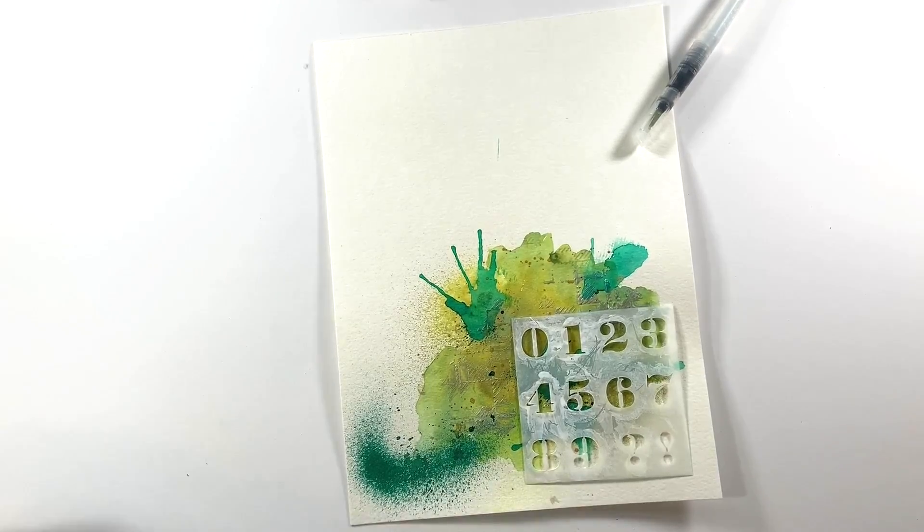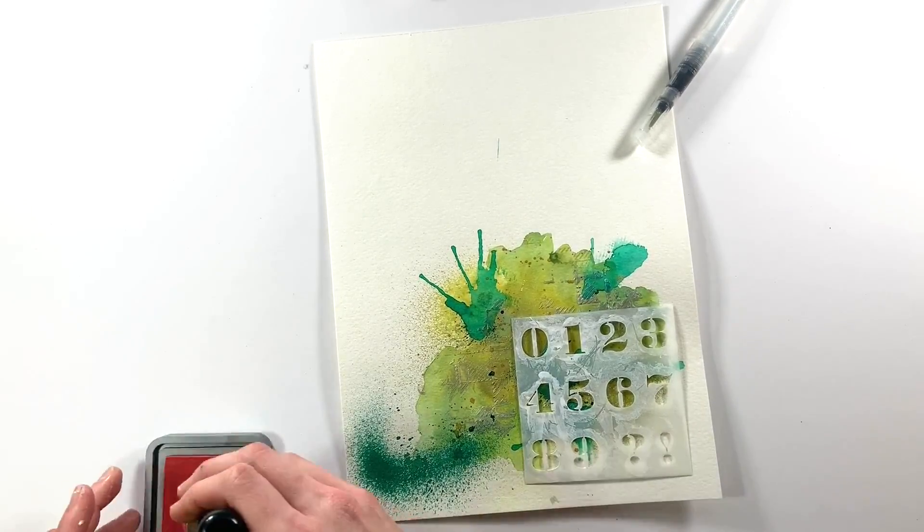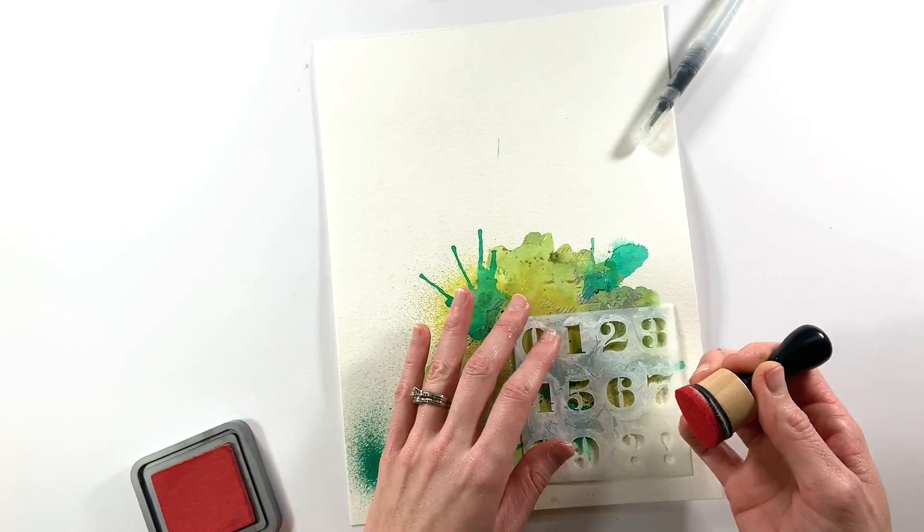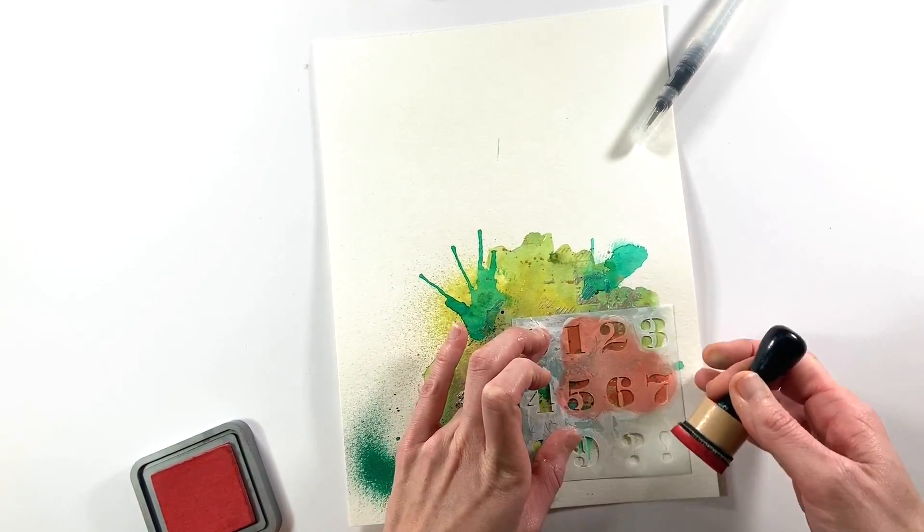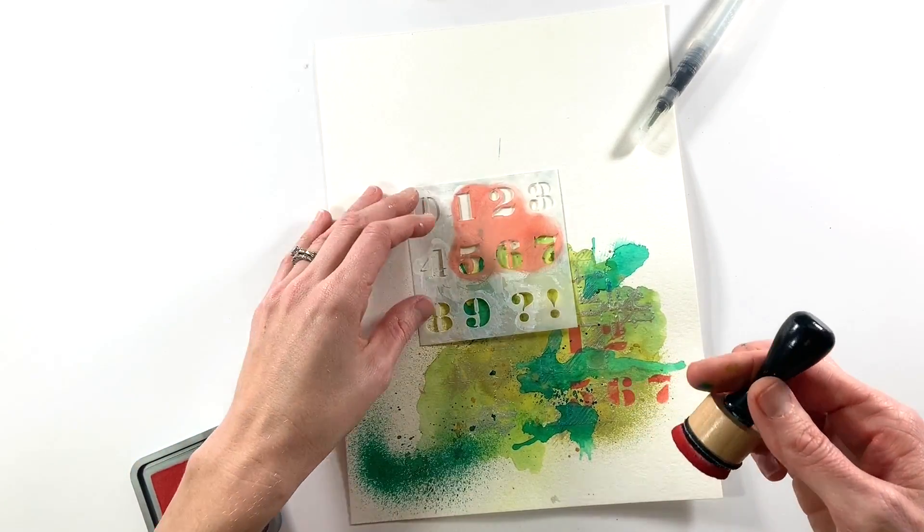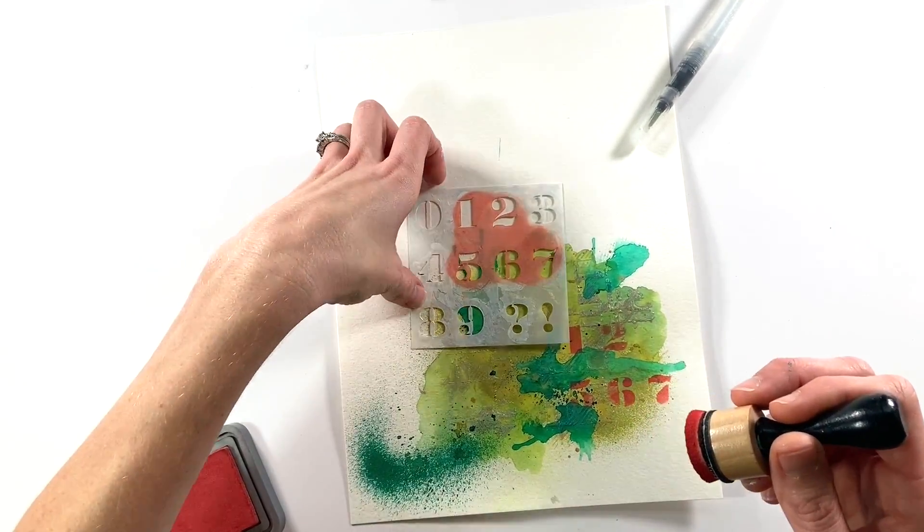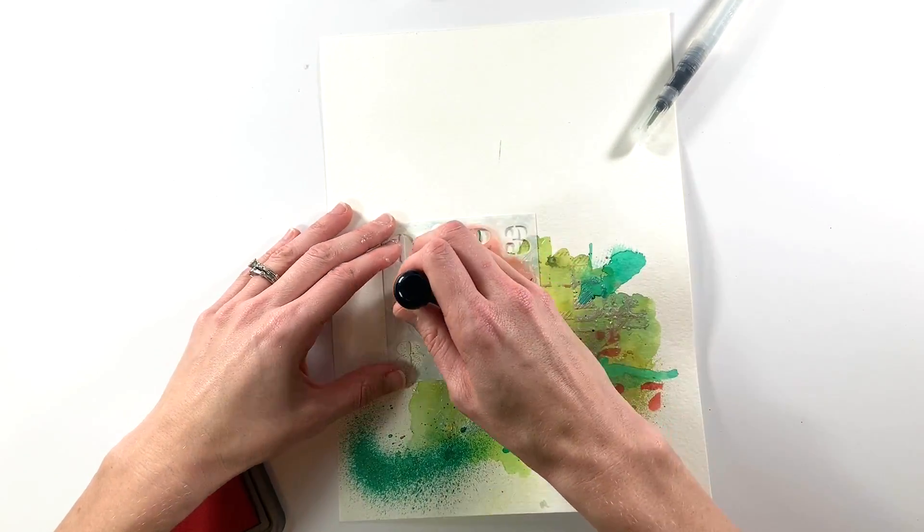This is a stencil from Illustrated Faith. It came with one of their devotional kits a few months back and I'm using this Distress Oxide Ink in Fired Brick in red and green. It is not a normal combination for me but of course for Christmas very appropriate and I'm just adding some of these numbers this number motif in the background.